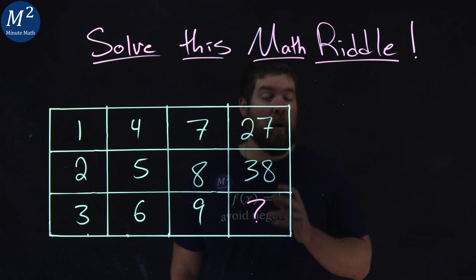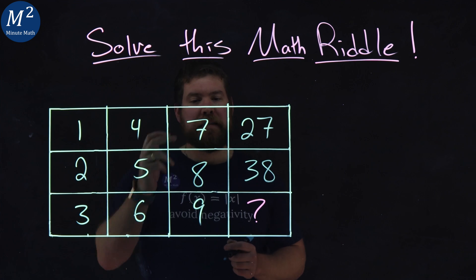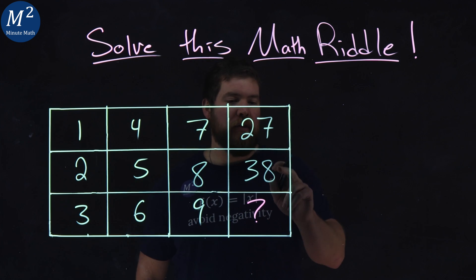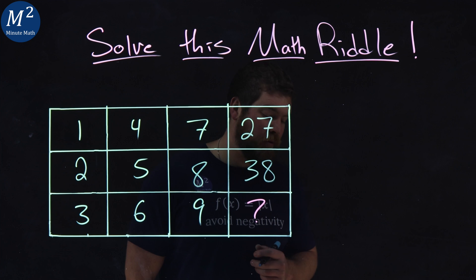The bottom right is the one we want to find. Our squares go 1, 2, 3, 4, 5, 6, 7, 8, 9, 27, 38, and this final question mark.